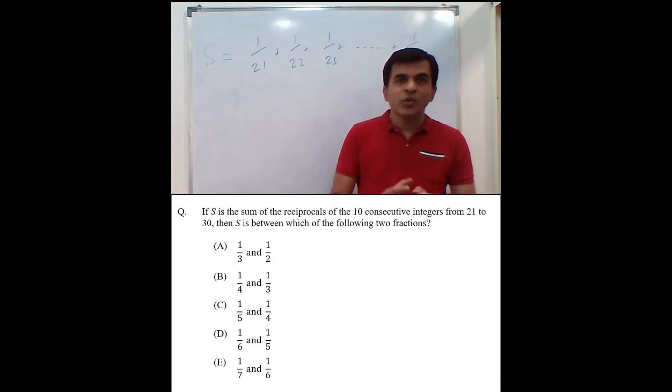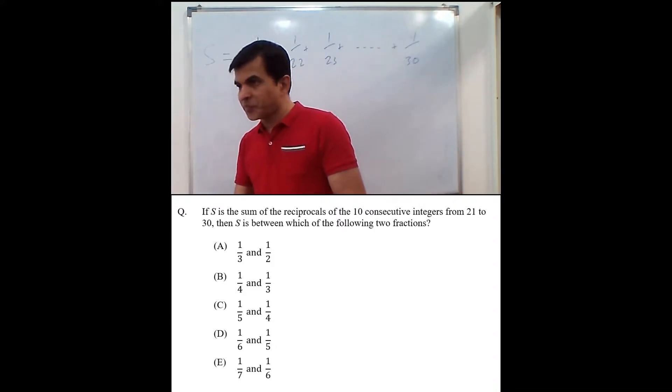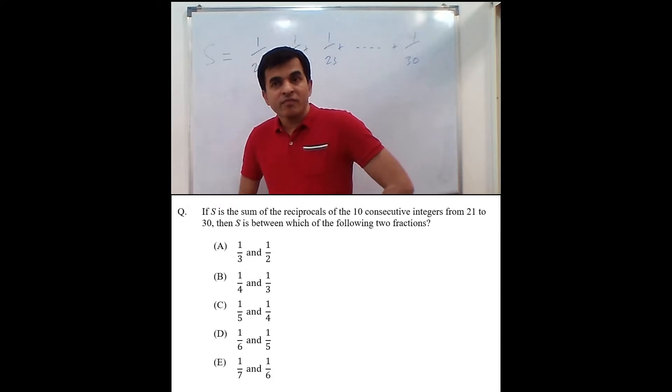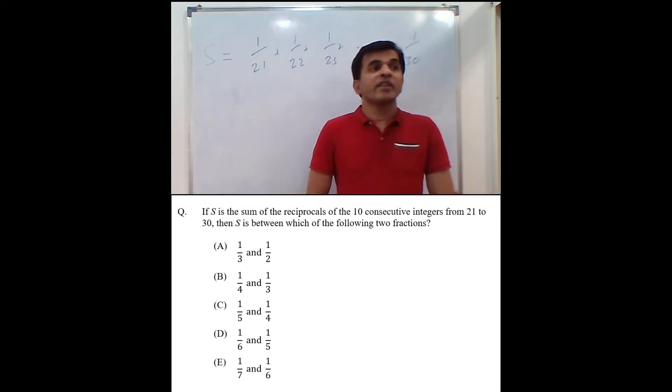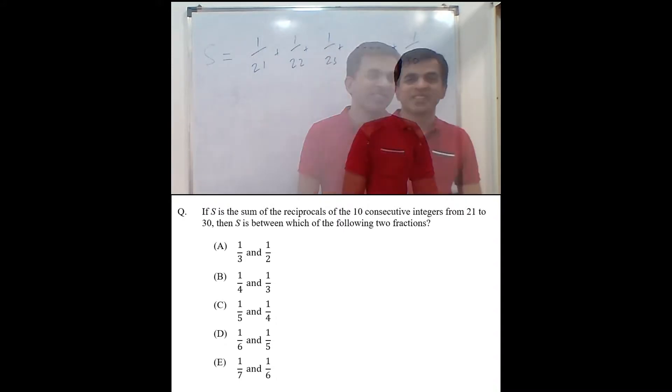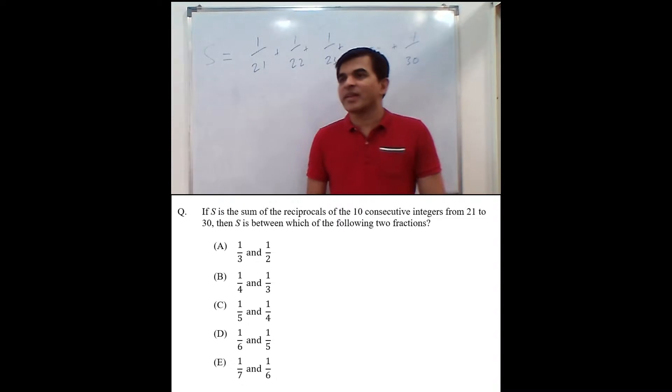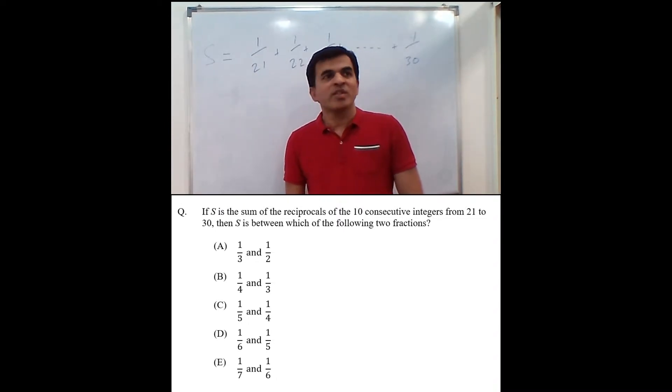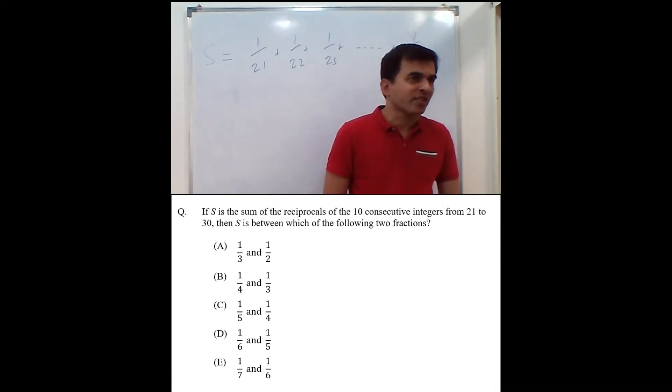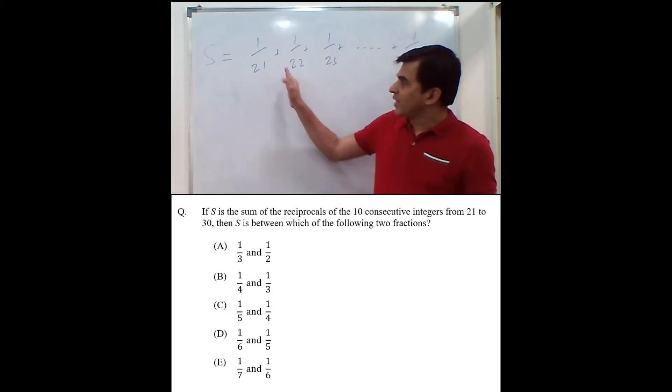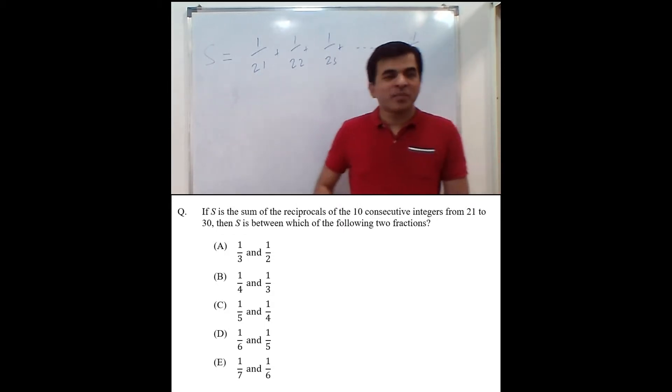What can you do on this question? The formula of arithmetic progression to denominators? The number 1 over 21, 1 over 22 is not giving us an arithmetic progression. Denominators are in AP, the fractions are not in AP. So you cannot use that logic out here.